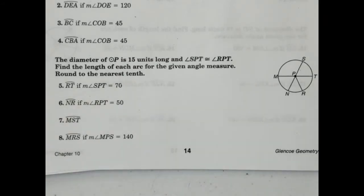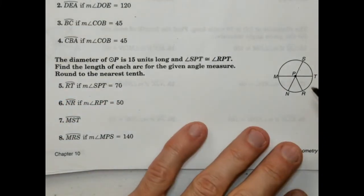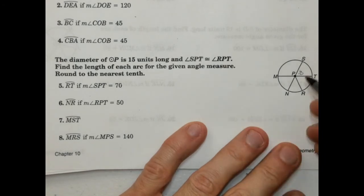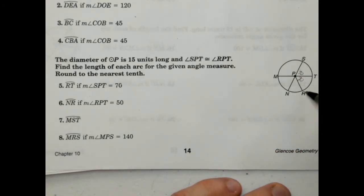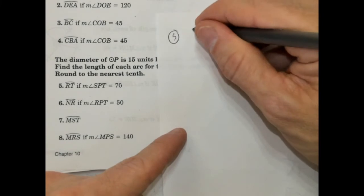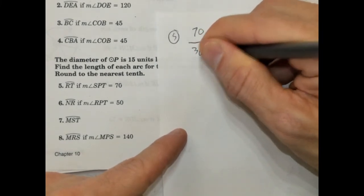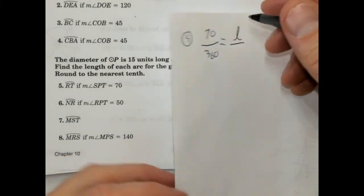So arc, we're going to find the measure of arc RT if the measure of SPT is 70. So if this is 70, we know that RPT is the same. Let's plug that in there. RT would be this one here. So we know that's going to be 70 degrees. So this is number 5. So 70 degrees over 360 is going to be equal to the arc length over the circumference, which we don't know yet.